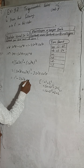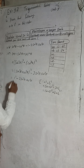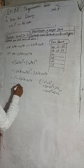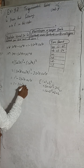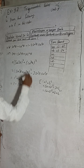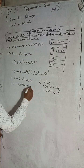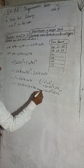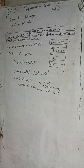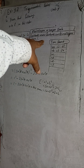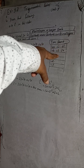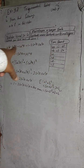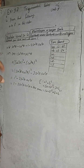So this becomes (sin²θ + cos²θ)² − 2sin²θ·cos²θ = 1² − 2sin²θcos²θ = 1 − 2sin²θcos²θ. This is the solution of 4b. The timestamp is 3 minutes 54 seconds.